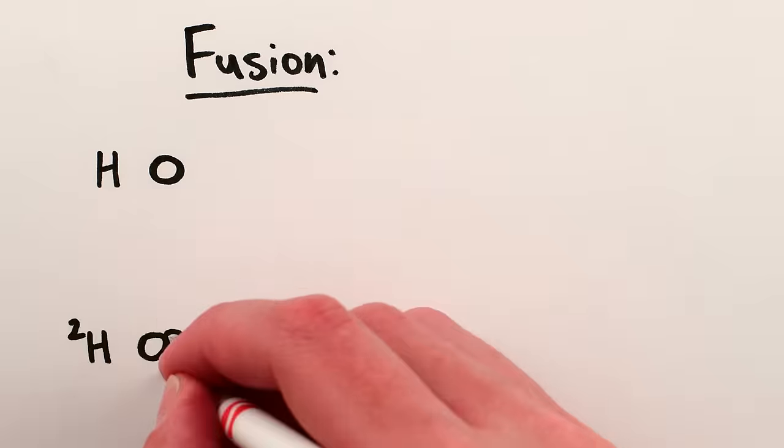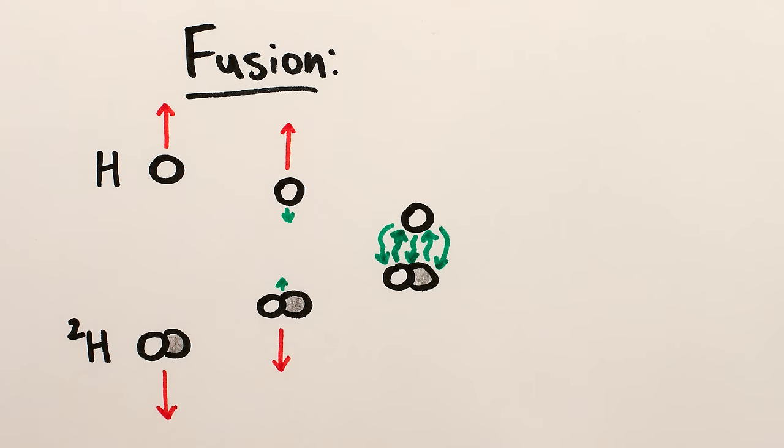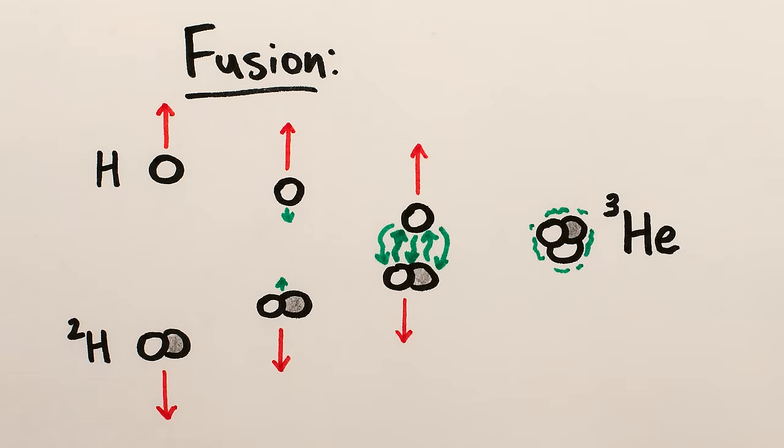Nuclear fusion, of course, happens when atomic nuclei, like hydrogen nuclei, come close enough together that their strong nuclear attraction can overcome their electric repulsion, and they fuse together into a single, bigger nucleus, like helium.